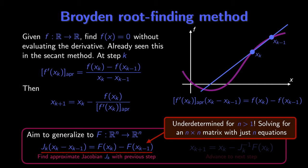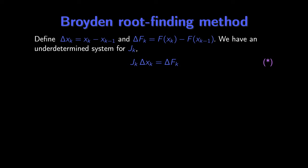Unfortunately there's a problem: if we are working with n greater than 1, then this equation will be underdetermined. The problem is that we're solving for an n×n matrix J_k but we only have n equations. If we make a step from x_{k-1} to x_k, we can only observe how the function changes along the line connecting them, whereas the Jacobian contains more information. Let's define Δx_k = x_k − x_{k-1} and Δf_k = F(x_k) − F(x_{k-1}), so our underdetermined system reads J_k Δx_k = Δf_k.